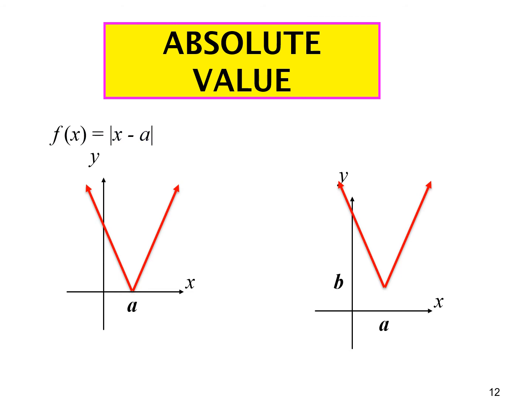For f(x) = |x - a|, set x - a = 0 to get x = a, which is the symmetry axis. Place the V-shape at x = a. For f(x) = |x - a| + b, the same graph is shifted b units up from the x-axis.